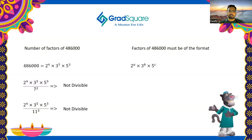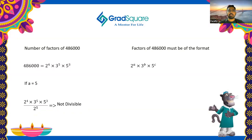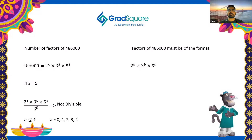Let's experiment with the values of a, b, and c. If a equals 5, dividing by 2⁵ won't work because only four 2s are in the numerator, leaving one 2 uncancelled in the denominator. So a must be less than or equal to 4, giving possible values: 0, 1, 2, 3, and 4. Importantly, a = 0 should not be forgotten — when a = 0, b = 0, c = 0, the factor becomes 1, which does divide 486,000 and must be counted.